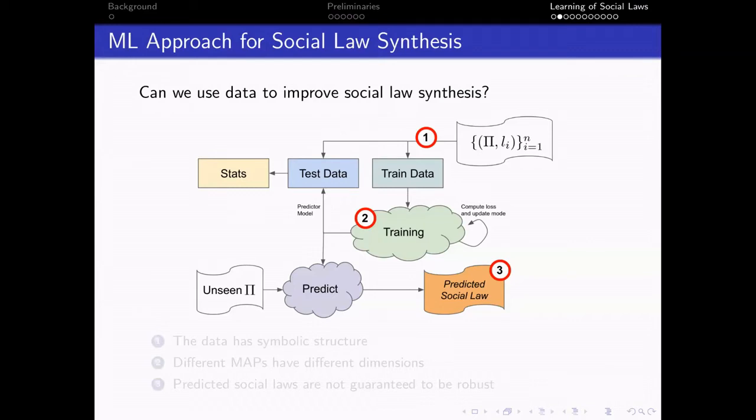There are a couple of challenges in this scheme. Let's assume that the first one is that the data has a symbolic structure. All of the problems we handle are PDDL-based problems, and we have to find another structure, a more compact structure, so we can train modern machine learning models.